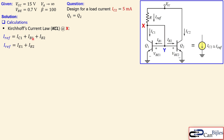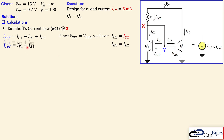We know that IC1 and IB1 together form the emitter current — the collector current plus the base current always equals the emitter current, regardless of the operating region. Since VBE1 equals VBE2, the collector current of Q1 equals the collector current of Q2, due to the exponential relationship between collector current and base-emitter voltage. Since Q1 and Q2 are matched with the same area and parameters, they have exactly the same collector current, base current, and emitter current. So instead of IE1 we can write IE2.